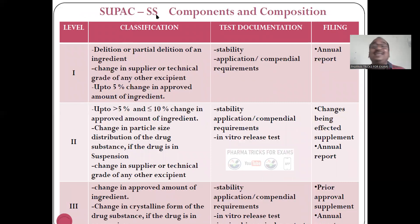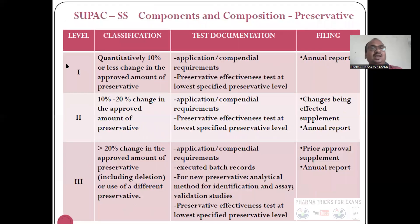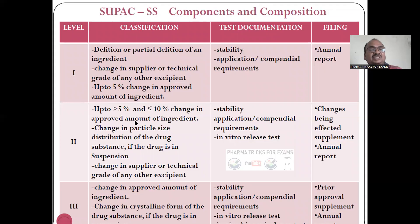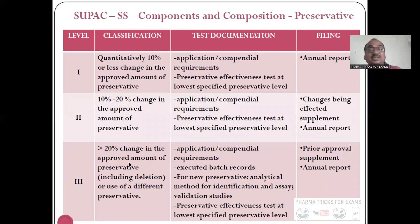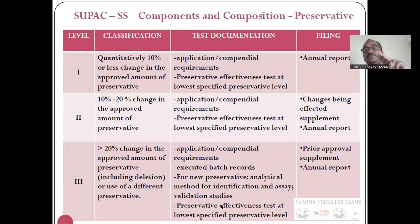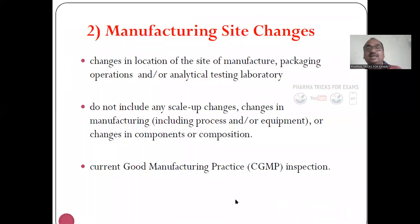For SUPAC SS — non-sterile semisolid dosage forms — level one, two, and three changes apply with corresponding examples and test documentation requirements. For components and composition involving a preservative change, there are three levels: up to five percent change is level one, ten percent is level two, and greater than twenty percent is level three. You have to identify under which category and level the change falls, perform the required tests in your company, and file the documentation to the regulatory department.